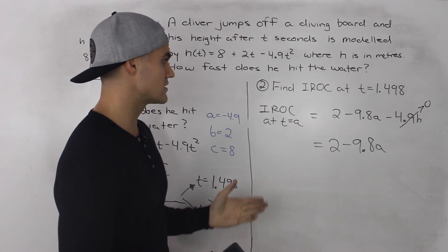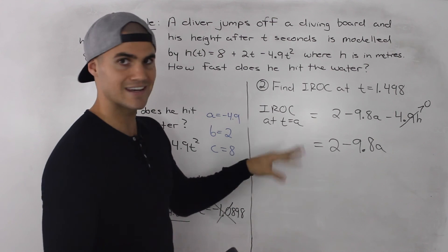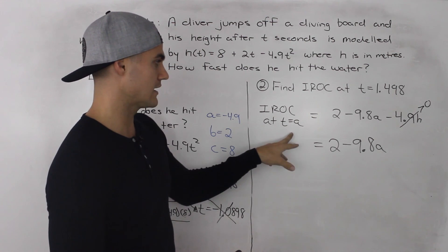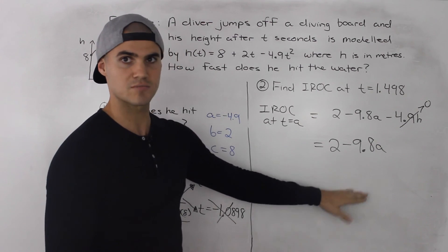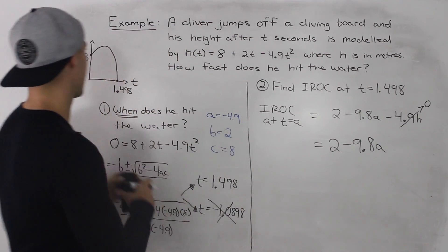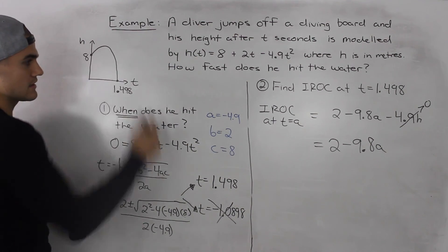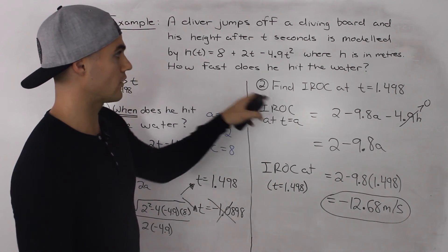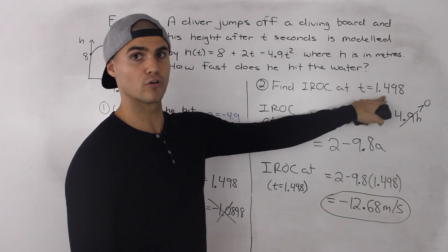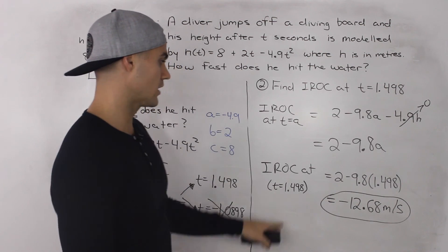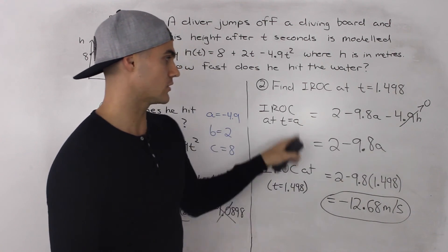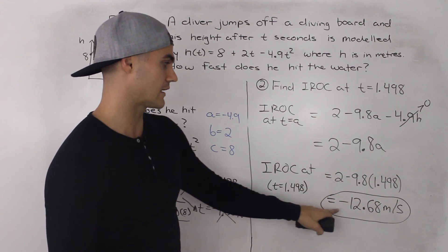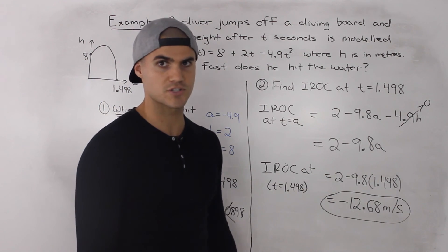So if we wanted to find the instantaneous rate of change at any time we can just plug in that time for the a value and that would give us the speed of the diver at any time while he's in the air. So since we want to know how fast does he hit the water at a specific time of 1.498, we plug in 1.498 for the a value in our general expression and we end up getting negative 12.68 meters per second.